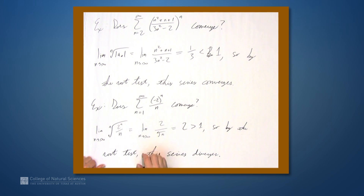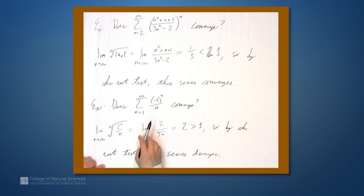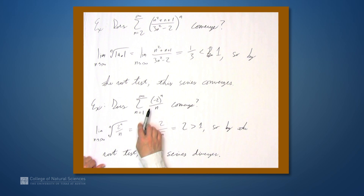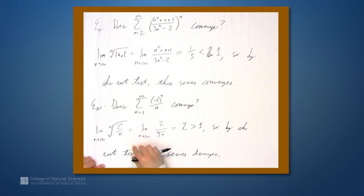You could also note that the terms are not going to 0, so this series must diverge by the divergence test. There's very often more than one way to prove whether a series converges or diverges.